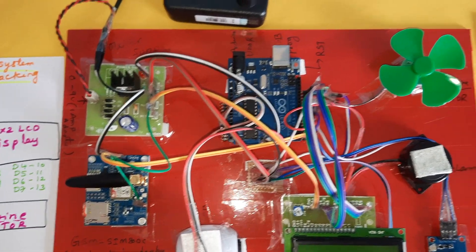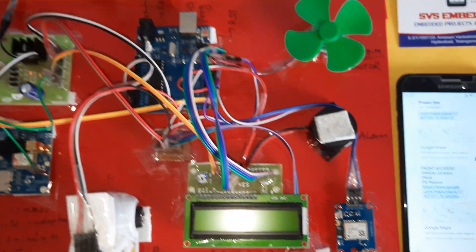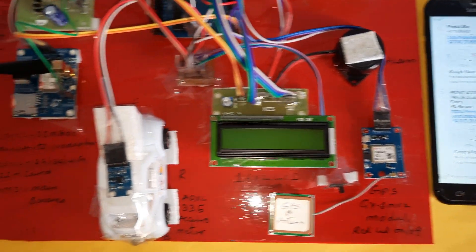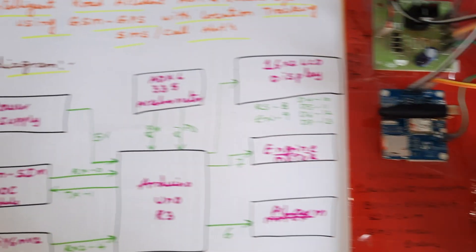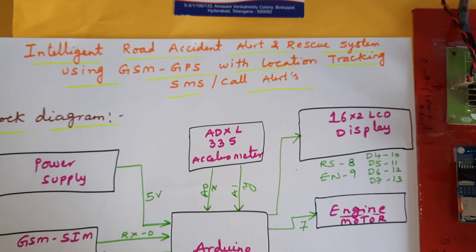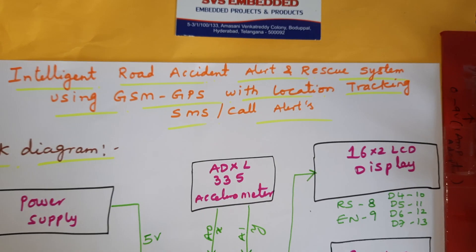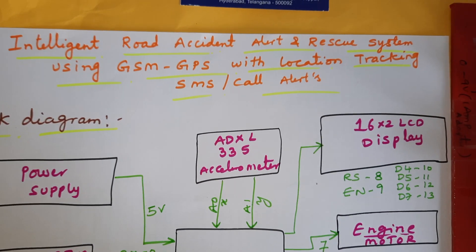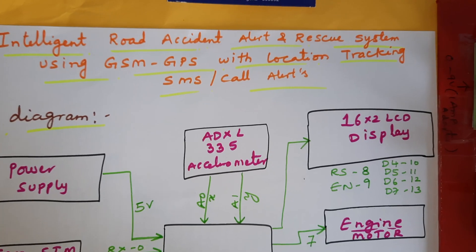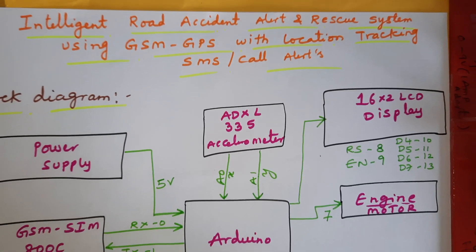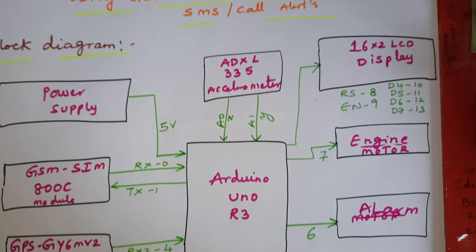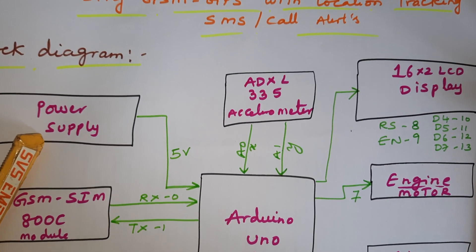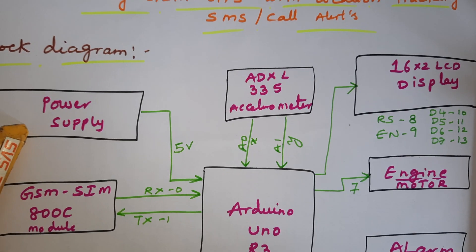Hi, we are from MSVS Embedded. The project title is Intelligent Road Accident Alert and Rescue System using GSM and GPS with location tracking, SMS alert, and call alert.